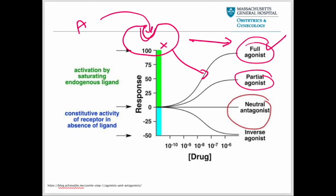An antagonist is a substance that binds to a receptor and inhibits or blocks its normal physiological function. Unlike agonists, which activate receptors to produce a biological response, antagonists do not activate the receptor. Instead, they prevent other molecules — such as endogenous ligands — from binding to the receptor and triggering a biological response. That is called an antagonist.